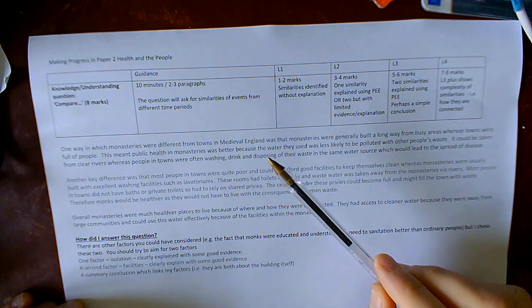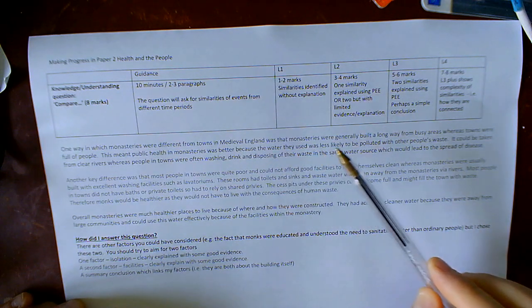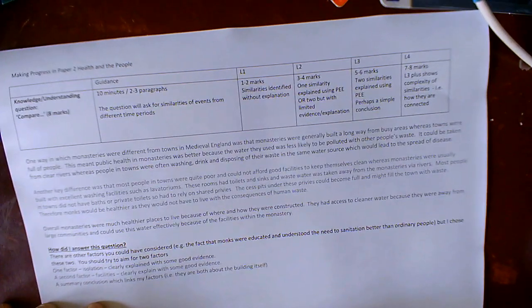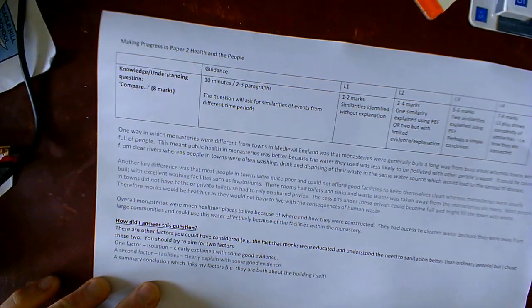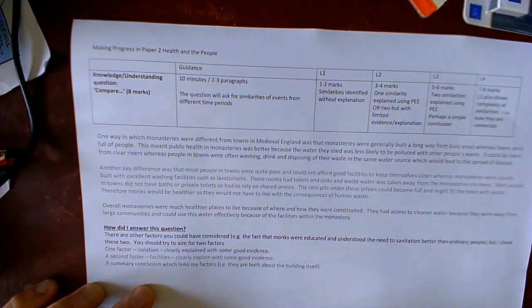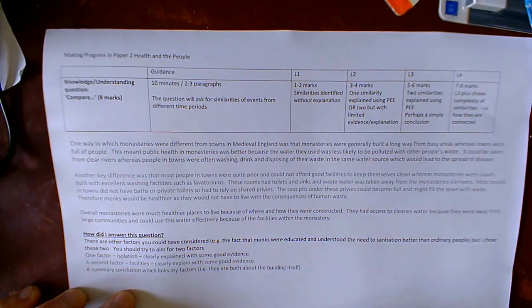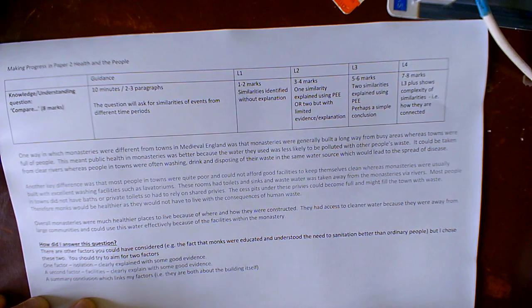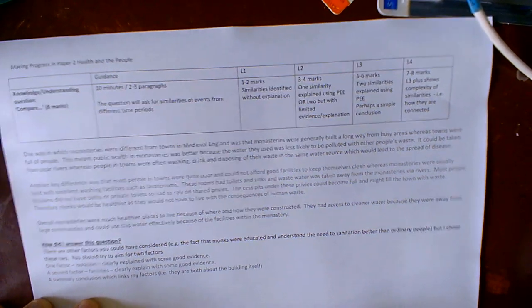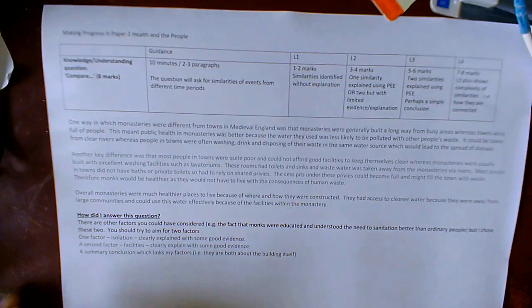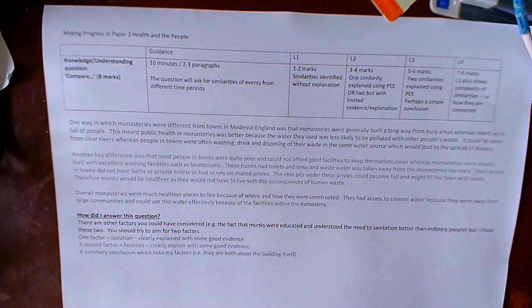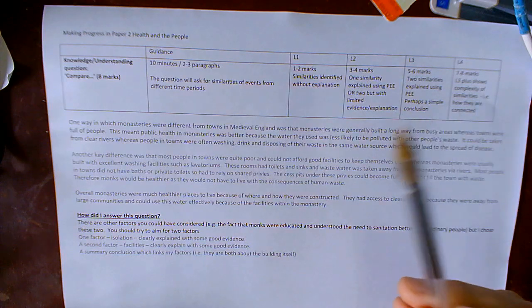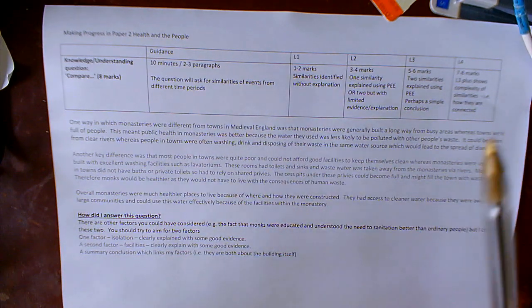This meant that public health in monasteries was better because the water they used was less likely to be polluted with other people's waste. It could be taken from clear rivers, clean rivers or clear rivers whereas people in towns were often washing, drinking and disposing of their waste in the same water source which could lead to the spread of disease. Forgive the typos. I'm obviously having to type these out and they might be a mistake but I think you get the point. What I've done is I've shown a difference, I've explained why it's different and its effect on public health, and I've given some evidence to show how that's different.